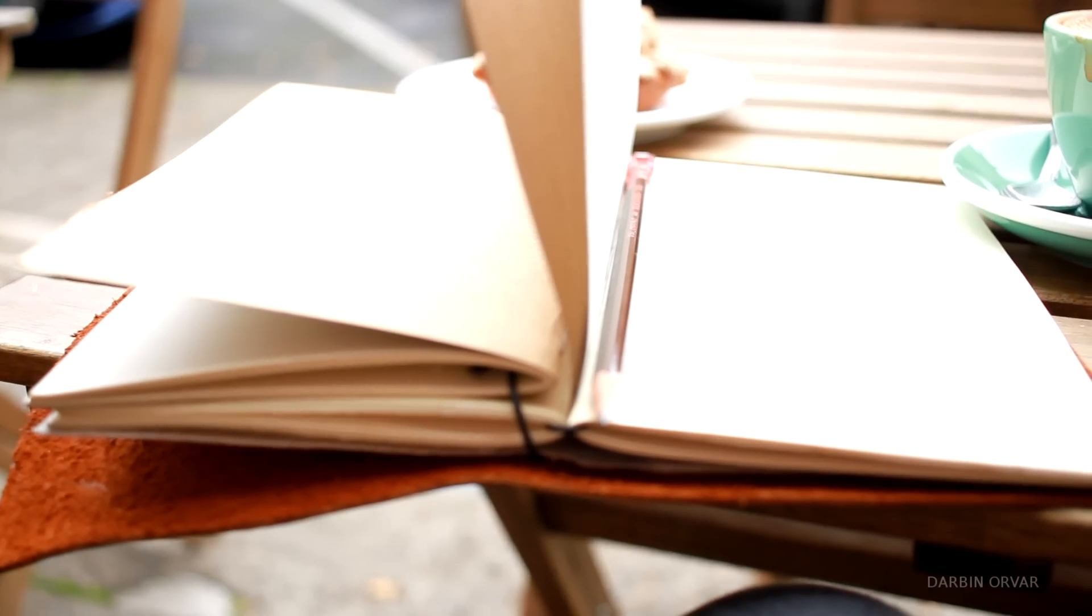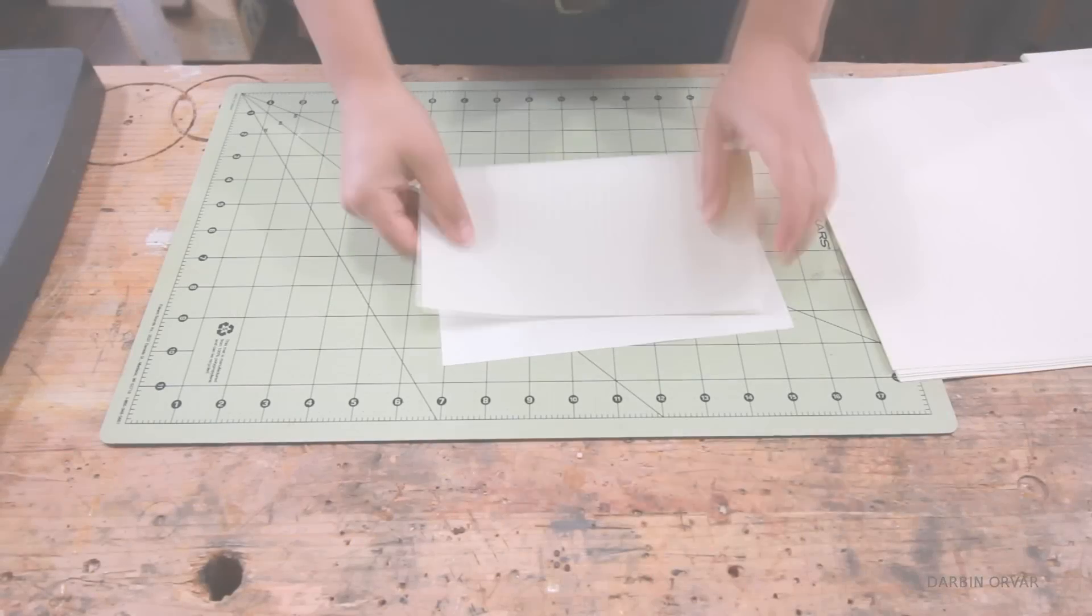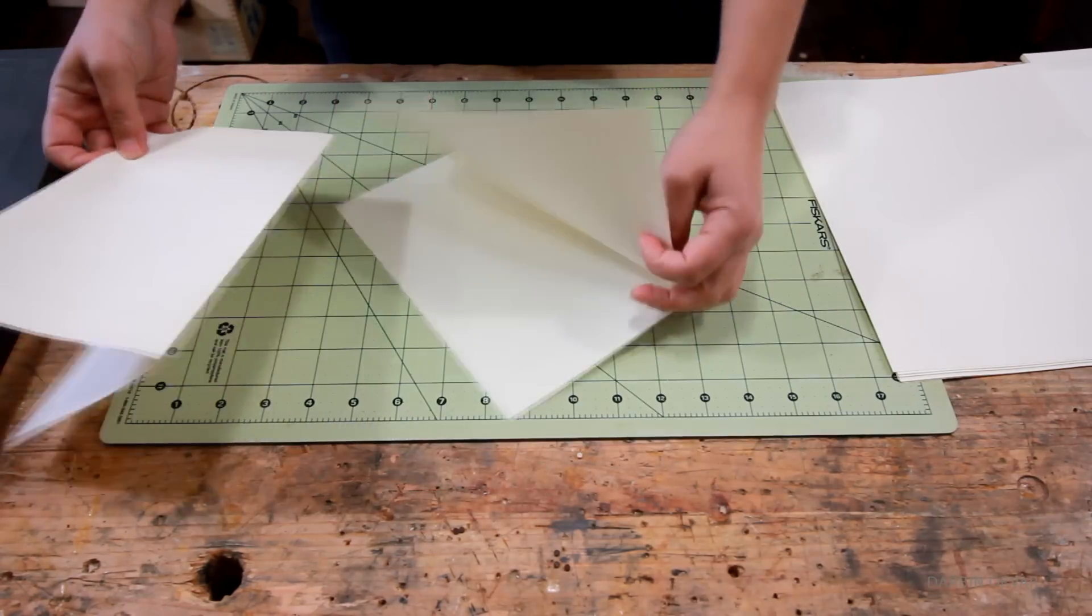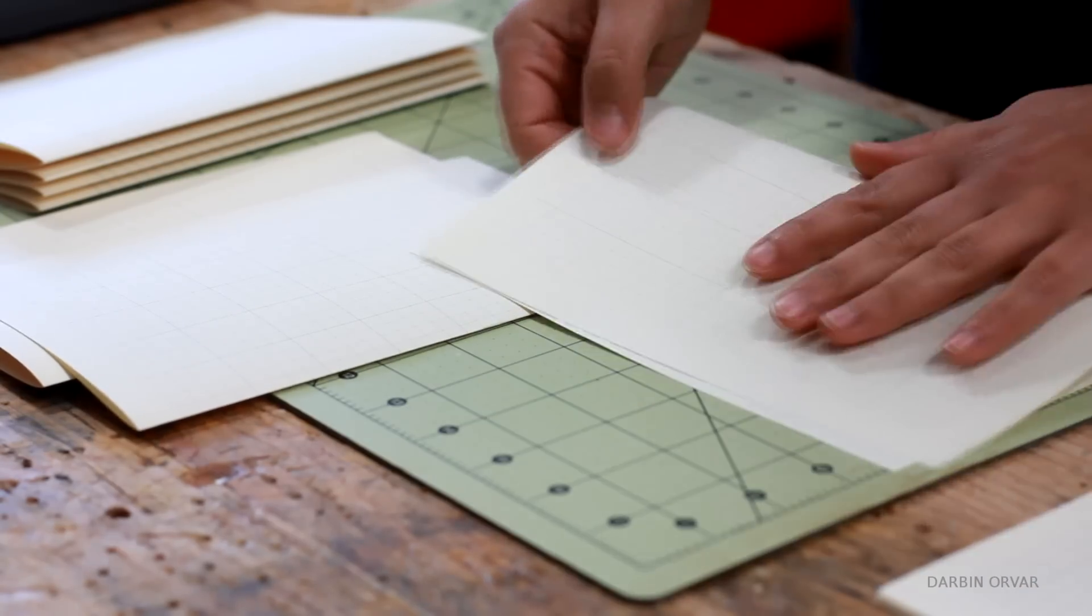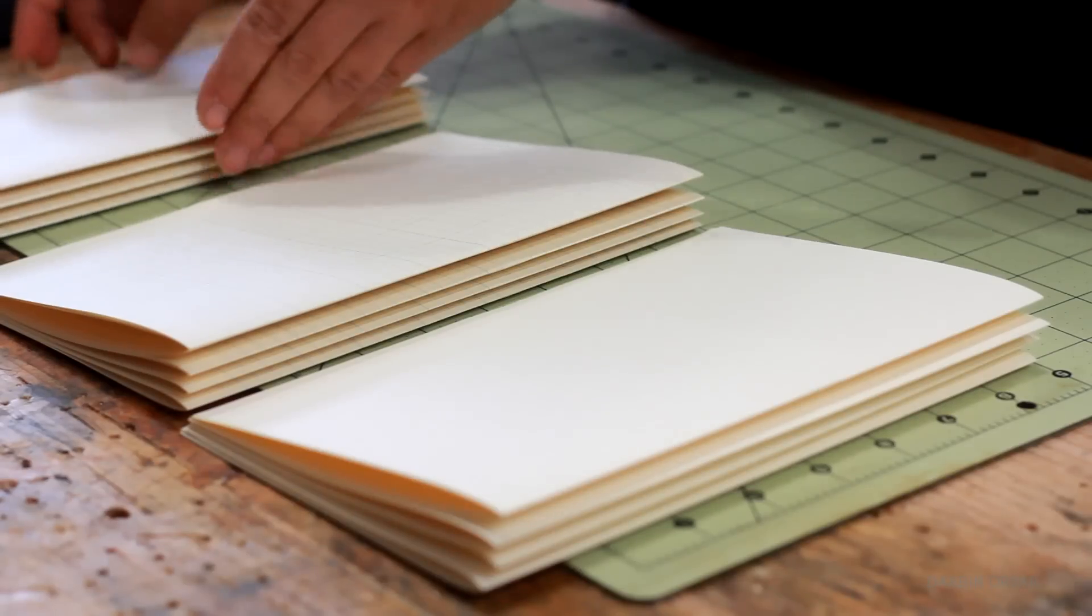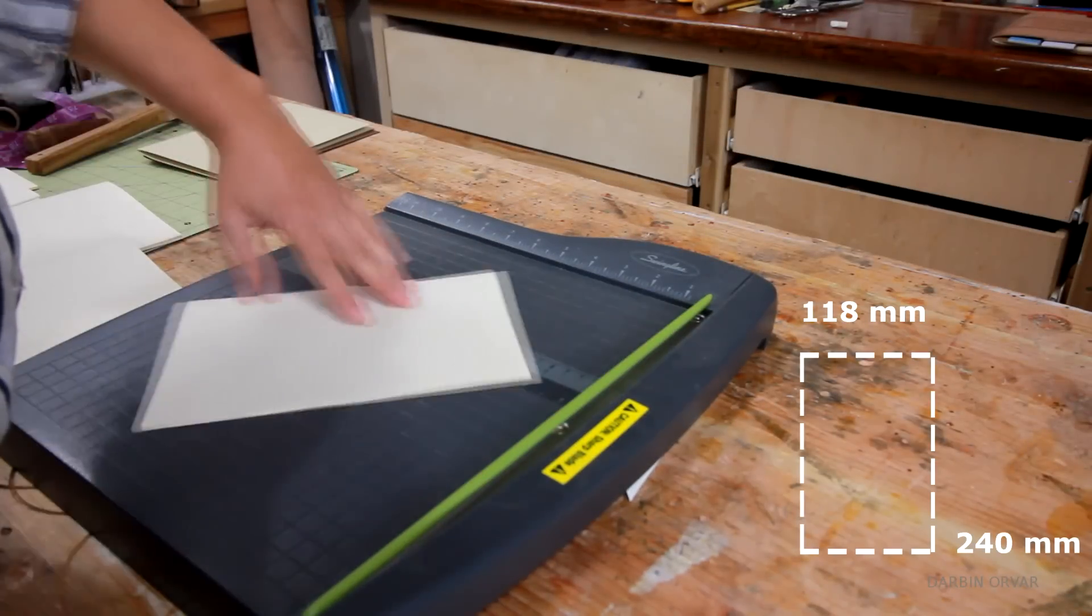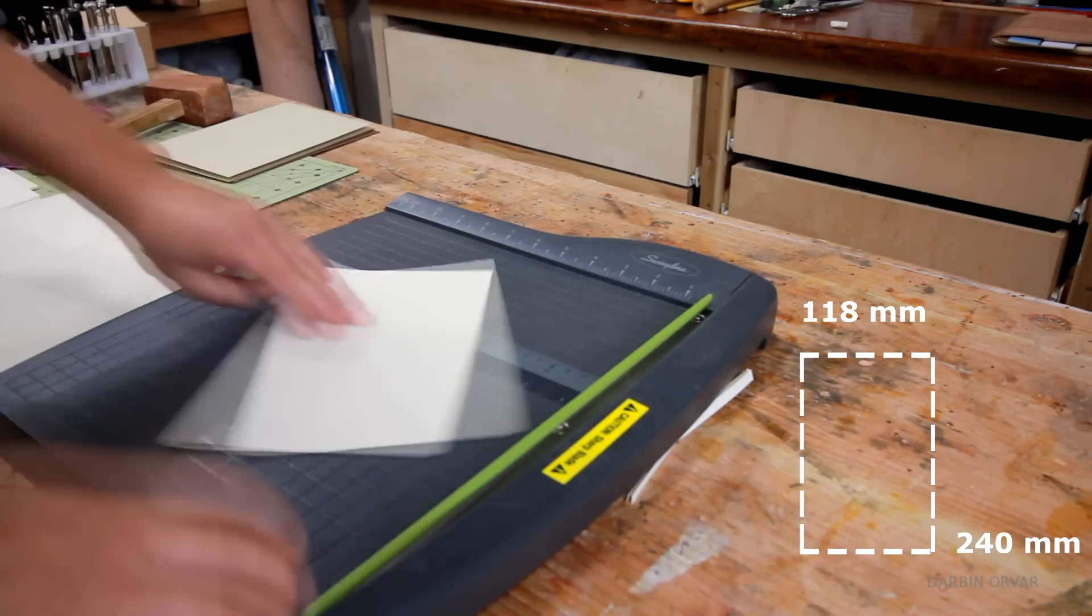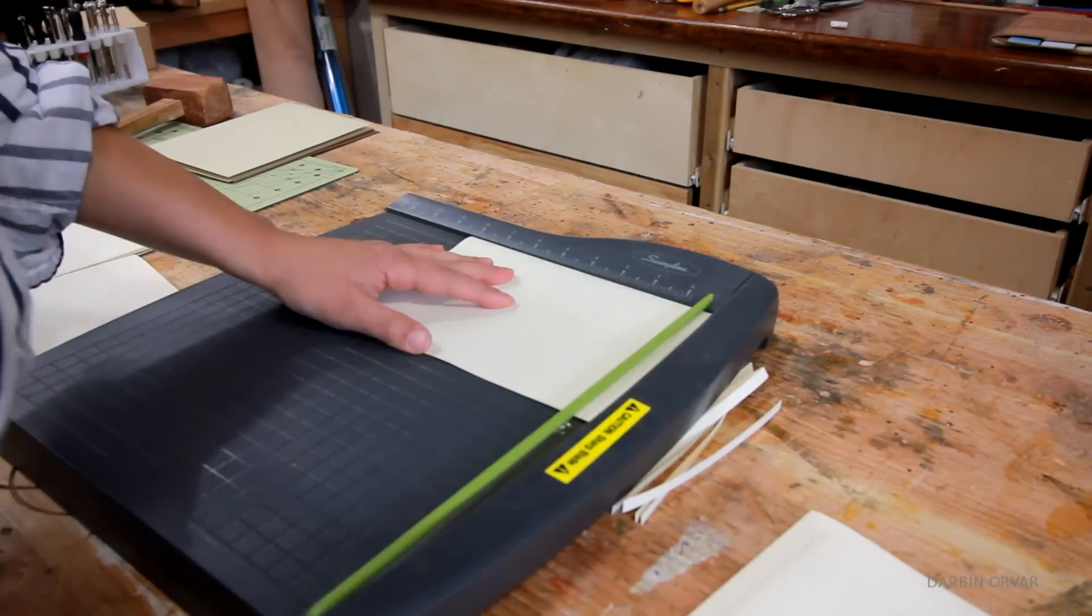Making notebooks is super simple. I fold the paper in half, then I arrange them in bunches of three. Next is cutting the paper to size. I chose to make my books 118 by 240 millimeters. It's a lot easier to cut this to size with a good paper cutter.